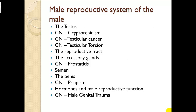In this section we're going to talk about the male reproductive system: testes, cryptorchidism, testicular cancer, testicular torsion, the reproductive tract, the accessory glands, prostatitis, semen, the penis, priapism, hormones, the male reproductive function, and male genitalia trauma.